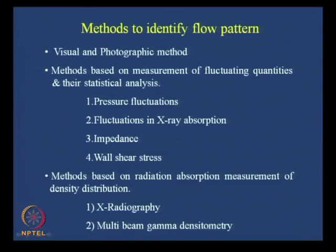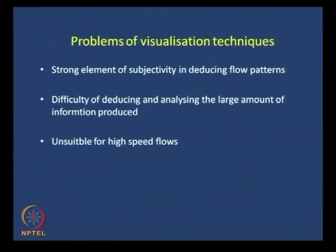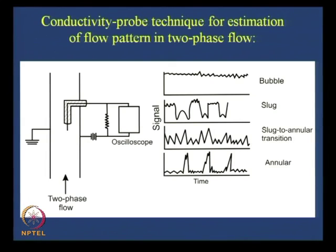X-ray absorption and multi-beam gamma densitometry are one particular technique. Another is the impedance technique — based on difference in electrical conductivity. Suppose liquid is flowing with high conductivity; the moment a bubble comes and touches the electrical probe, the conductivity instantaneously falls. I have certain pictures to show you how this conductivity probe technique works. In this case we work on the basis of a point electrode probe where we measure the voltage difference between one electrode flush-mounted with the walls and another point electrode where only the tip is conducting.